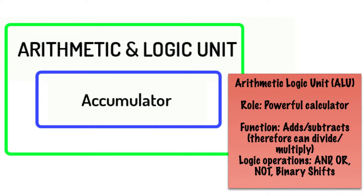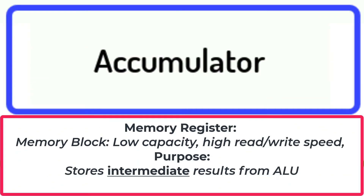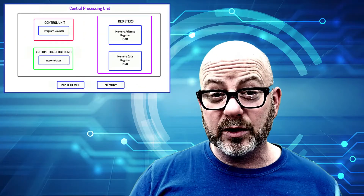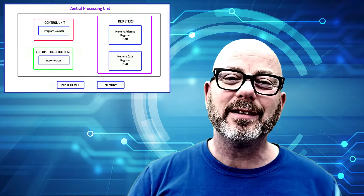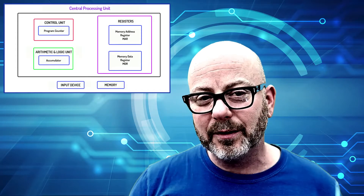There's an additional component within the ALU called the accumulator. This is a register — a low capacity, high speed form of memory. The purpose of the accumulator is to store the intermediate results from the ALU. For example, a result from one calculation may need to be stored to be part of a second or third calculation — and that's how the accumulator serves its purpose.